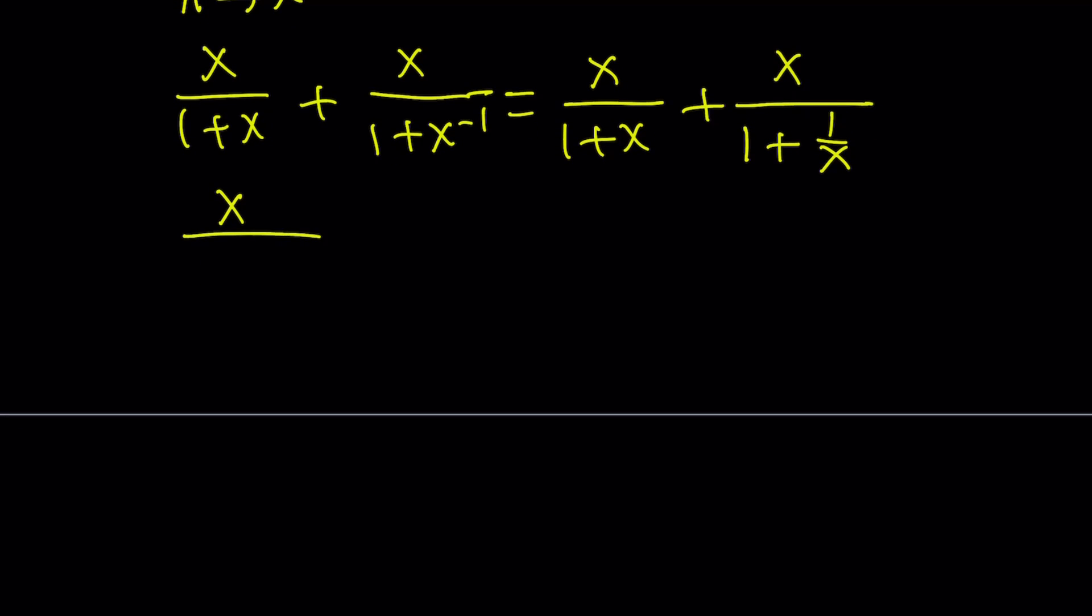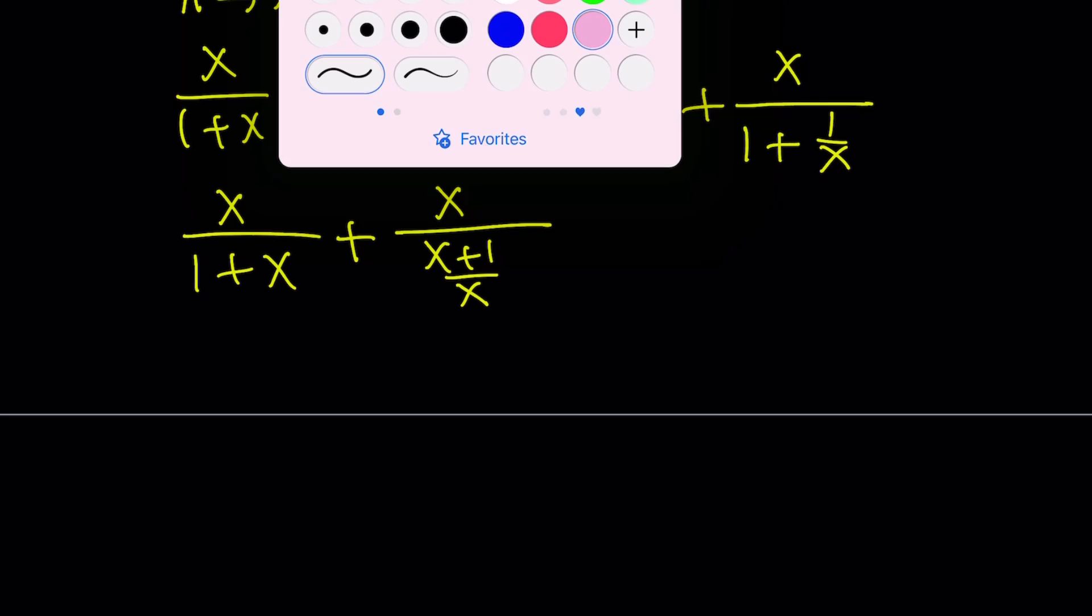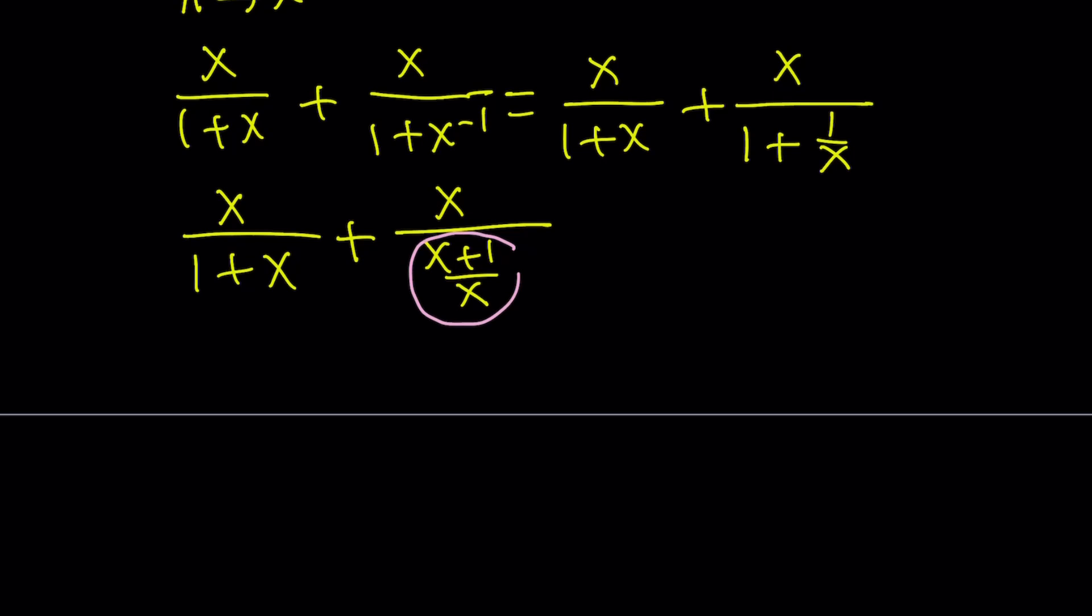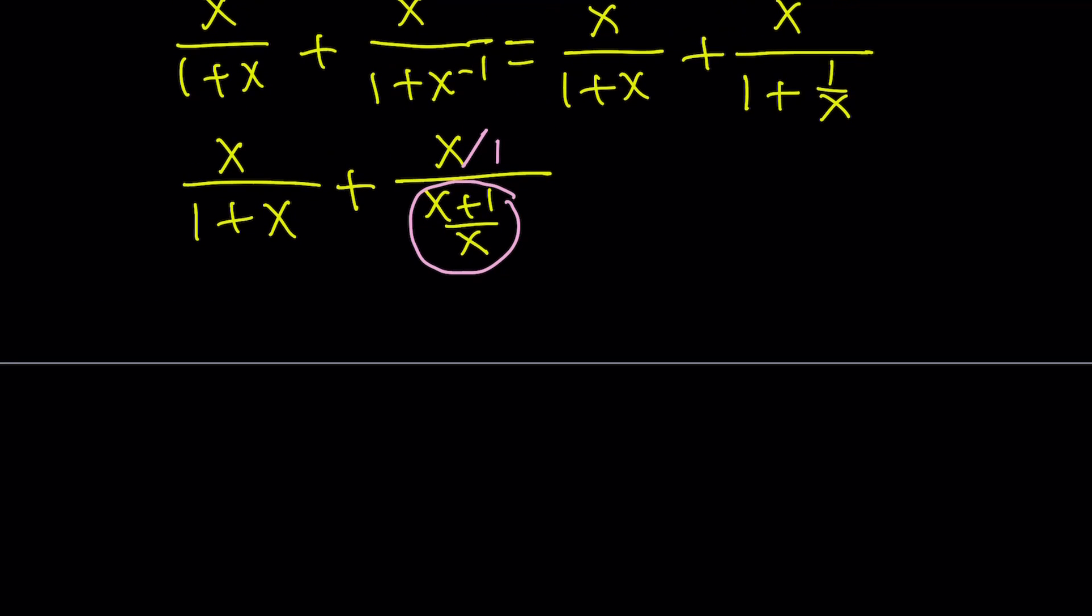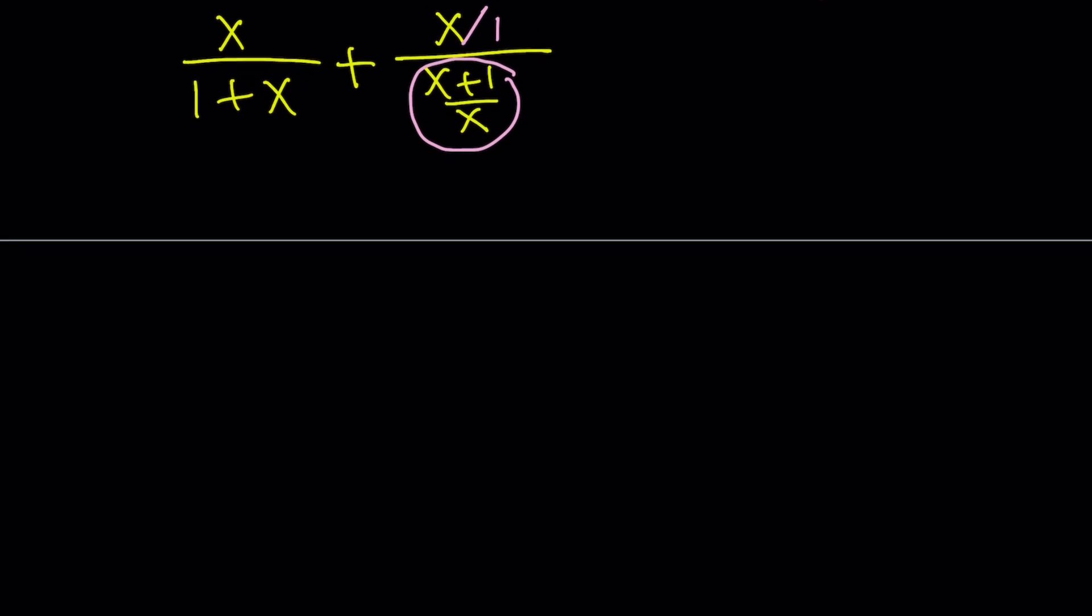I'm going to be getting x over 1 plus x. And this one at the bottom, I have x plus 1 divided by x. Now when you're dividing two fractions, remember x can be written as x over 1 so that it becomes a fraction. You basically flip the second one and multiply by the first or you multiply by the reciprocal of the denominator. Pretty much the same thing.